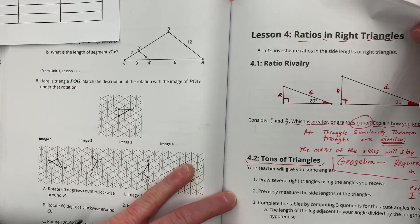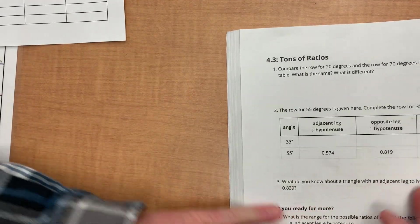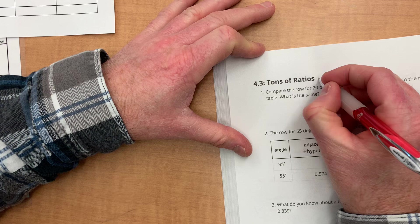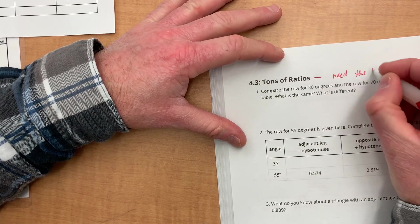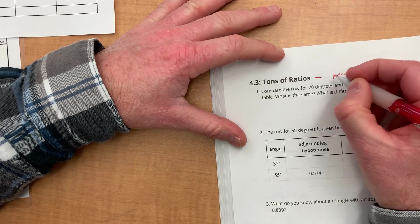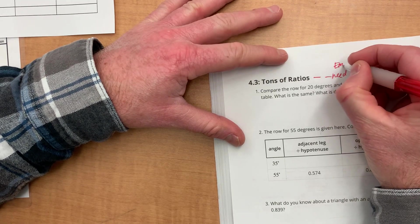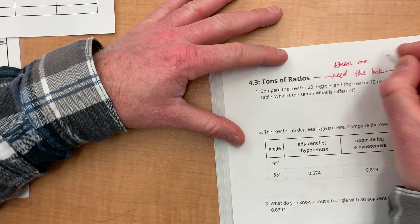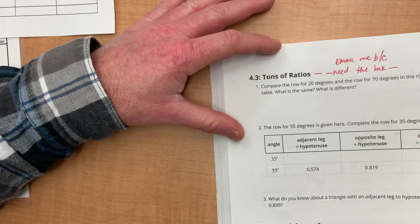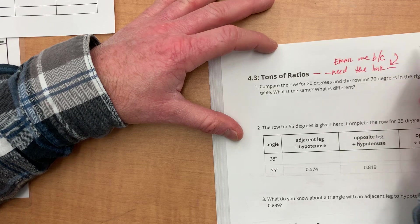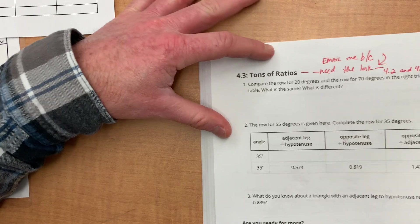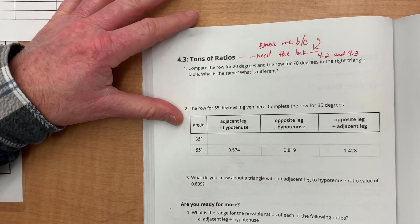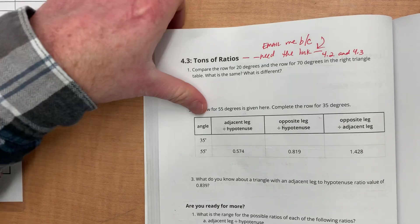So, okay, cool. 4.3, let's jump into that. This is also one where you are going to need the link. So, I'm challenging you to email me because you need the link for 4.2 and 4.3. So, once you do that, I'll send you the link with further instructions on how to complete this.